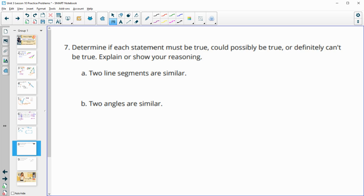All right. Number seven says determine if each statement must be true, could be true, or definitely can't be true and show your reasoning. So this one says two line segments are similar. So if I just kind of draw out two line segments here, there's definitely going to be a scale factor between these, because if this one is a length of A and this one is a length of B, then the scale factor is just going to be whatever B divided by A is, because there's only one length here. So this one must always be true. You'll always be able to dilate the segment to the next.